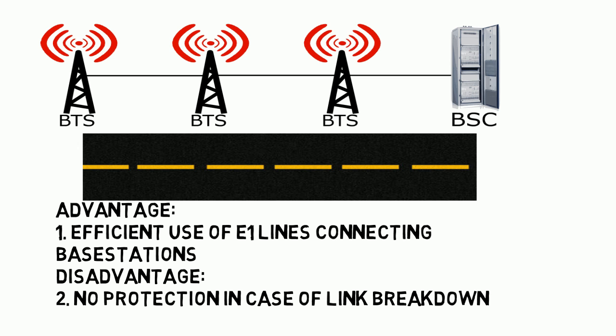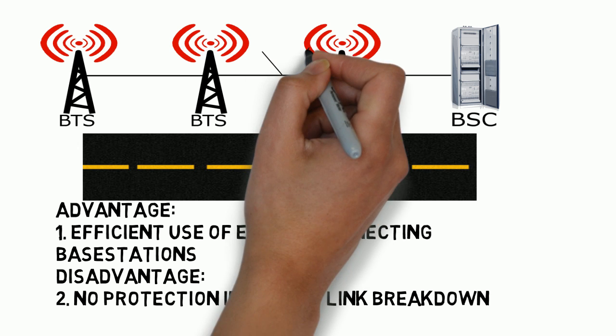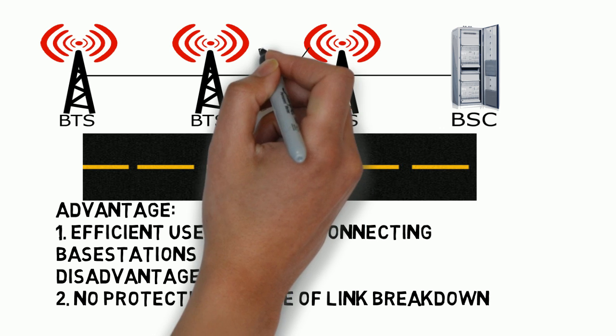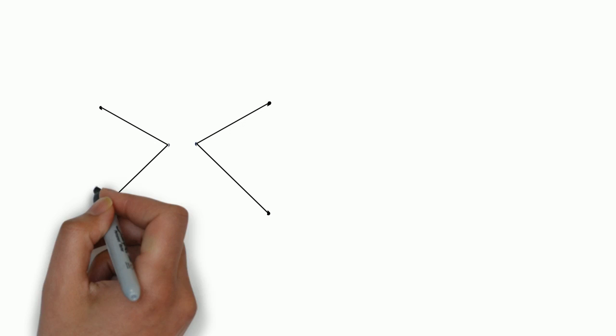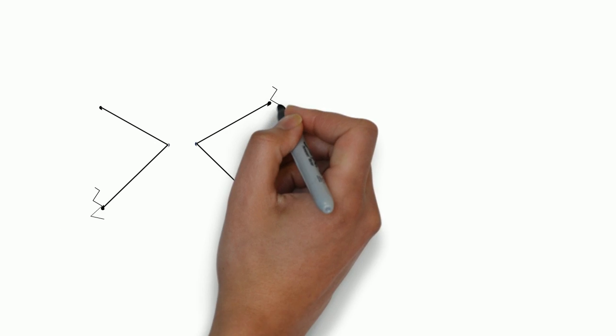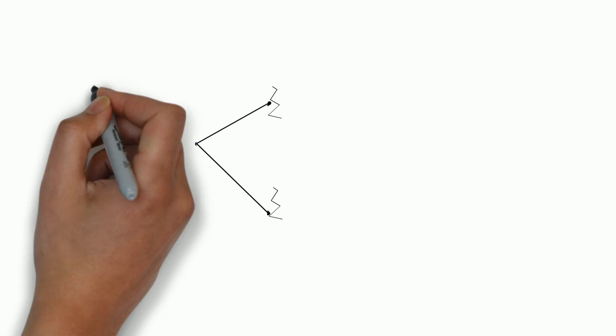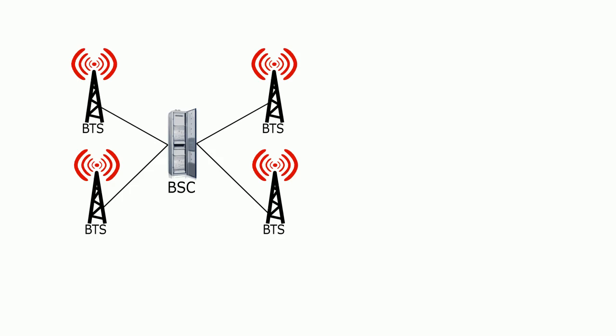This configuration has a very evident disadvantage: there is no protection in case of a link breakdown. For example, if there is a link failure between two base stations, the other base stations on the left side would no longer be connected to the network.